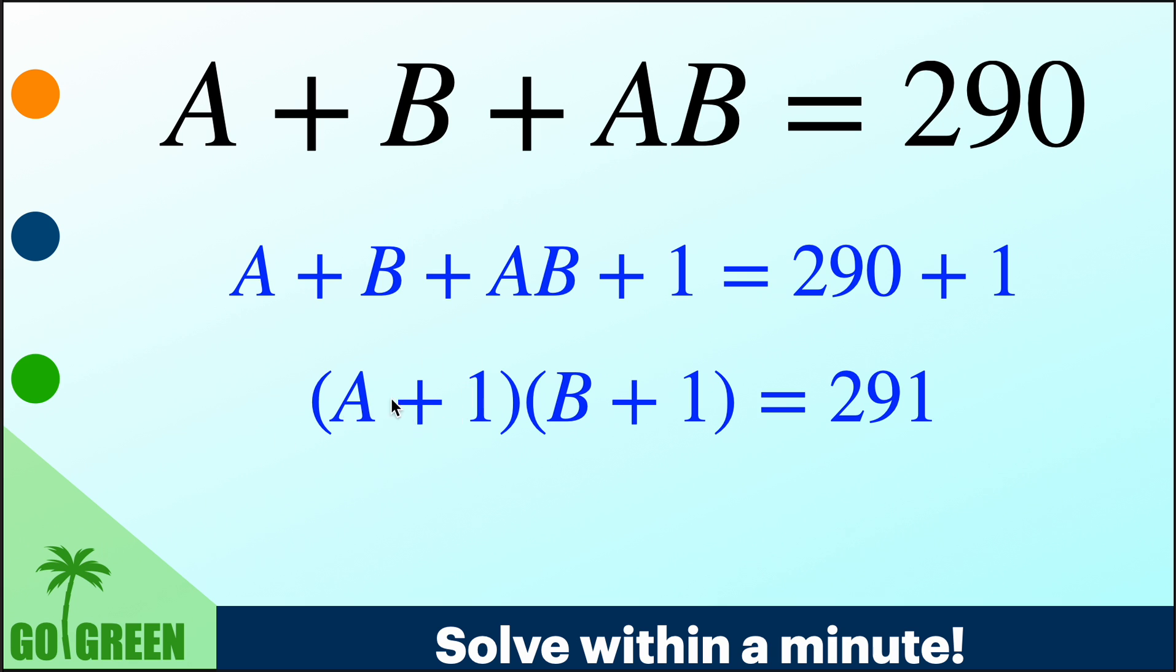Well, so, then how to factor 291? So basically, this is one natural number, this is another natural number, which are different from 1 and 290, that their product is 290. So now, can we write 290 as a product of two numbers and guess from there what are the values of A and B?